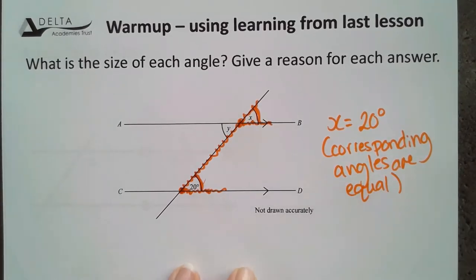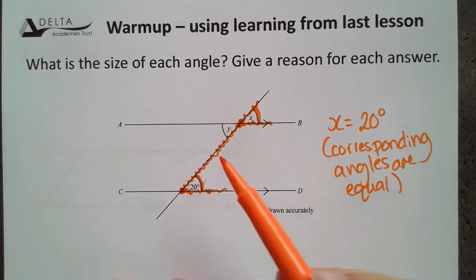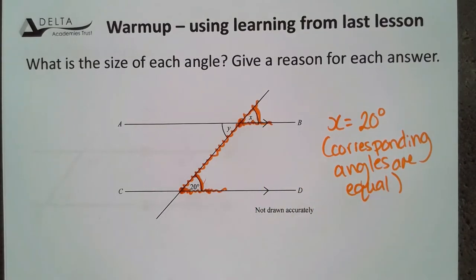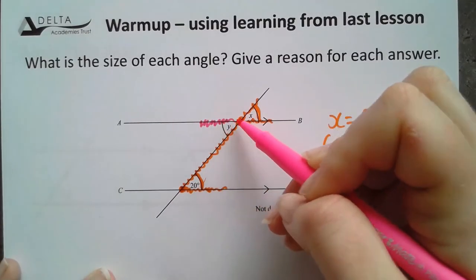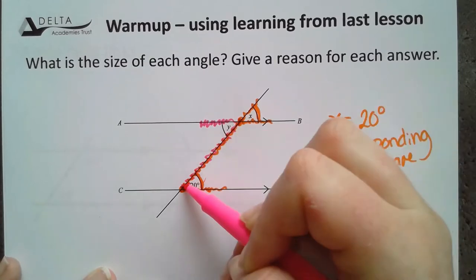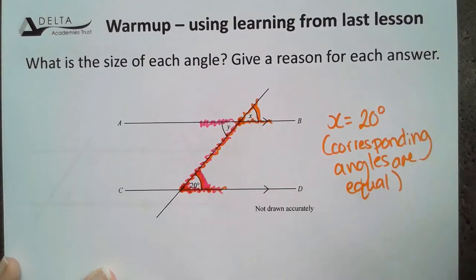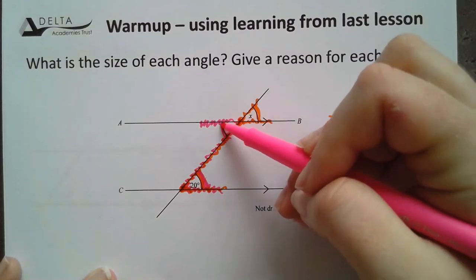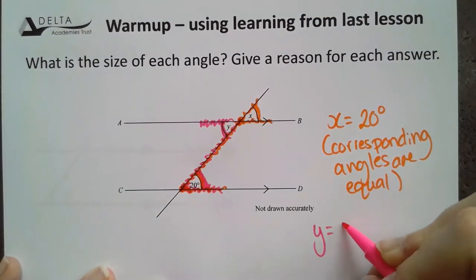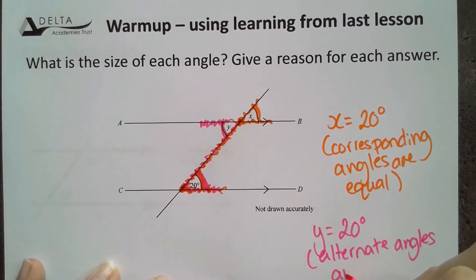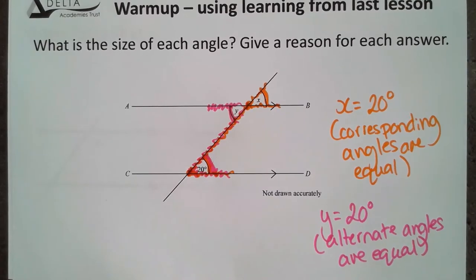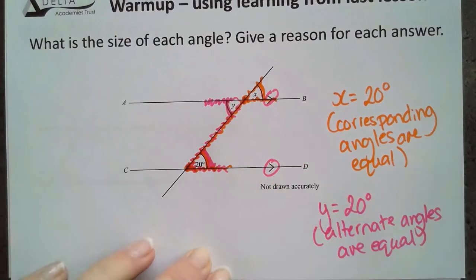There's two different ways to find y. We could use the fact that x and y are vertically opposite to each other, but what I'm going to do is use something a little bit different and go back to the beginning of yesterday's lesson. I'm going to trap that 20 on the inside of a Z shape, which then does the same for the y. That gives us that y is 20 degrees as well because alternate angles are equal. Remember those properties only hold in parallel lines, but we know they're parallel from these symbols here.